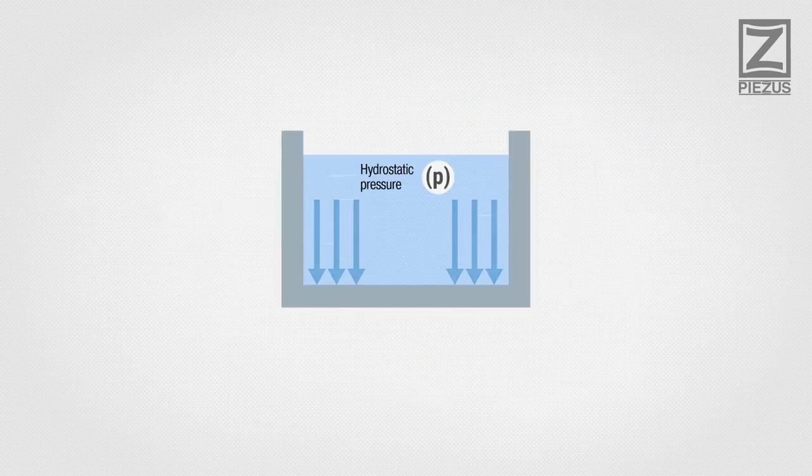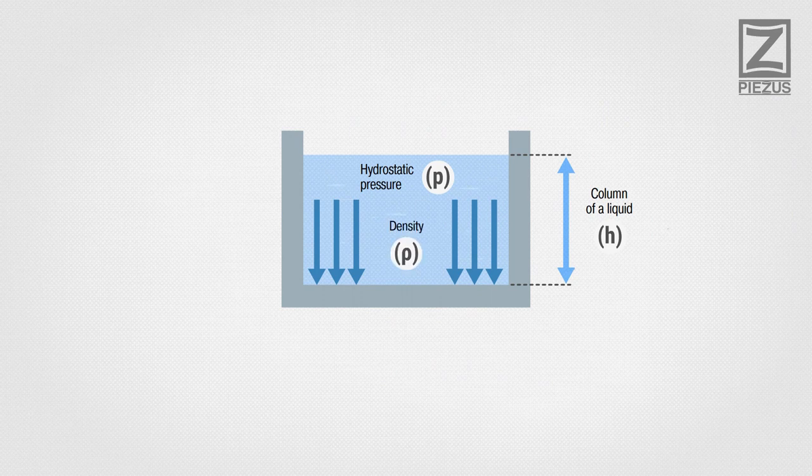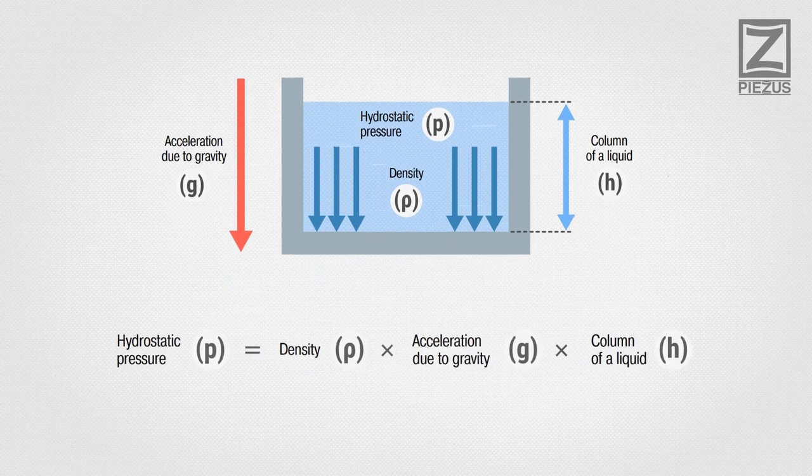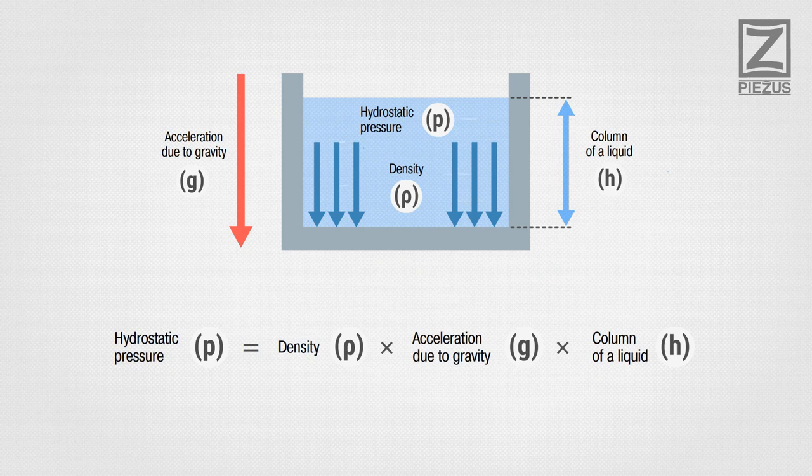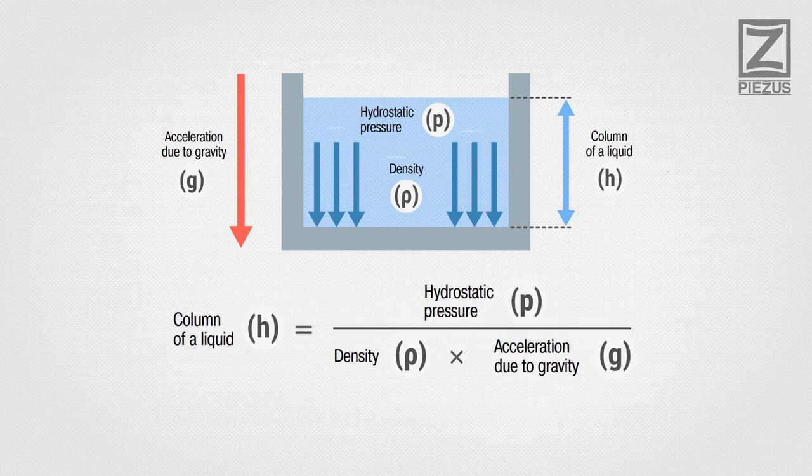Hydrostatic pressure, P, is created by a column of liquid with density, rho, in a gravity field characterized with the acceleration due to gravity. The level of liquid, H, is related with the hydrostatic pressure, P, in accordance with the following formula.